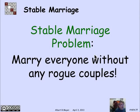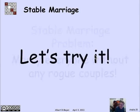So the stable marriage problem is: can we get everybody married off with no rogue couples — a stable set of marriages? People may not be happy, but they'll never find anybody else who is unhappy in the same way and willing to run off with them. It turns out there always is a way to find a stable set of marriages.